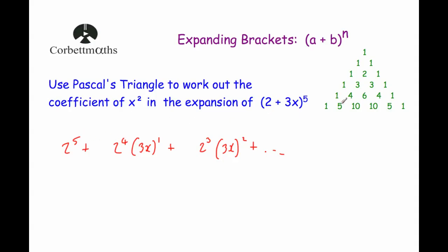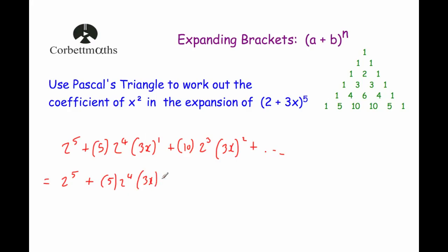The power is 5, so we need 6 numbers from Pascal's triangle: 1, 5, 10, 10, 5, 1. The first number is 1, then 5, then 10. It's important to work out the powers of 3x first: (3x)² = 9x². So the x squared term is: 10 times 2 cubed times 9x squared. Now 2 cubed is 8, so 10 times 8 is 80, times 9 is 720x squared.